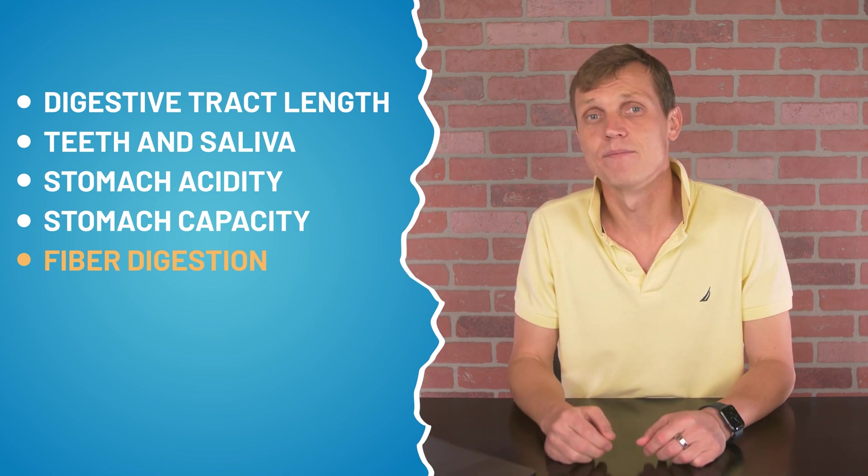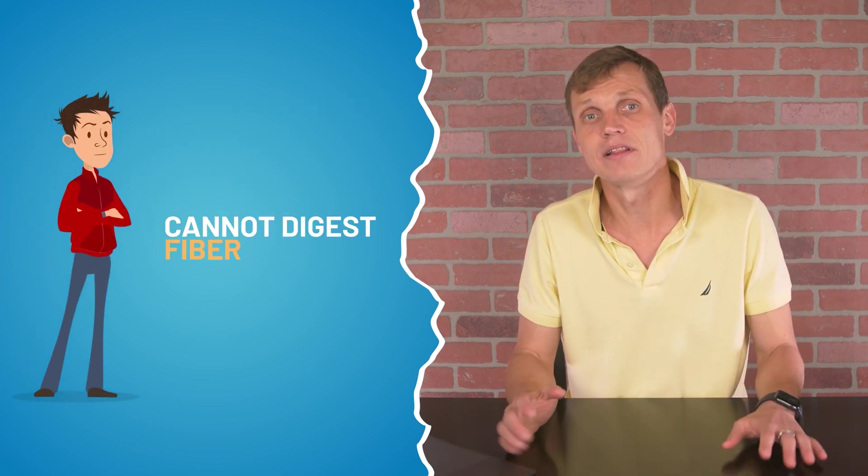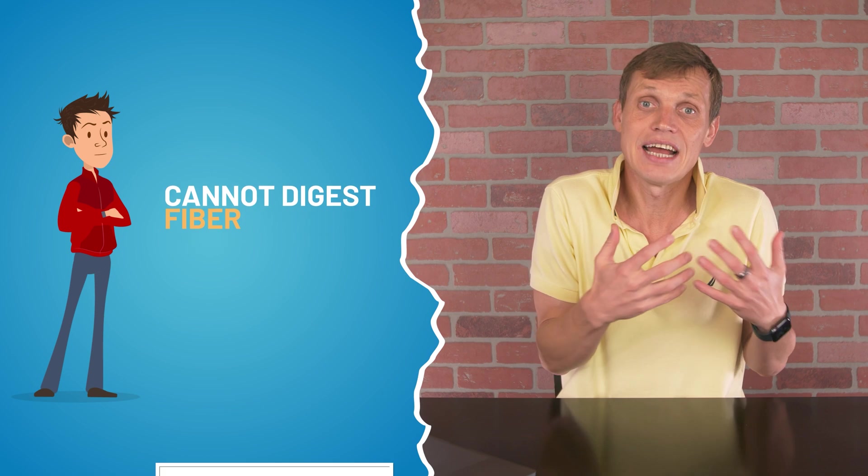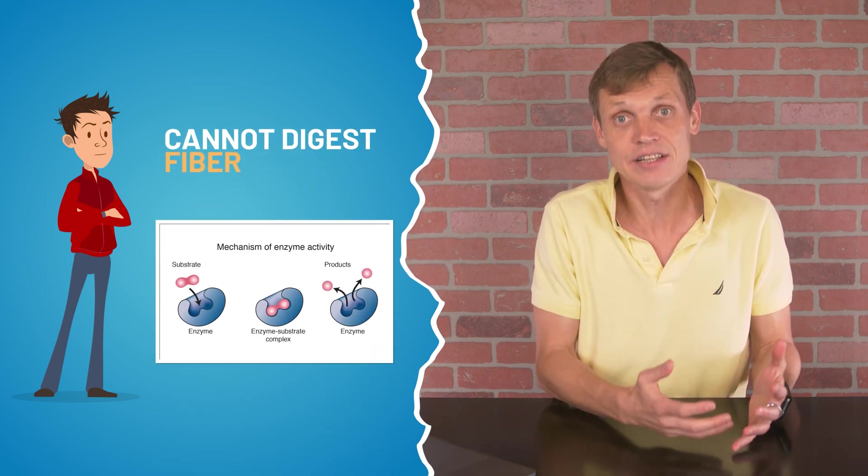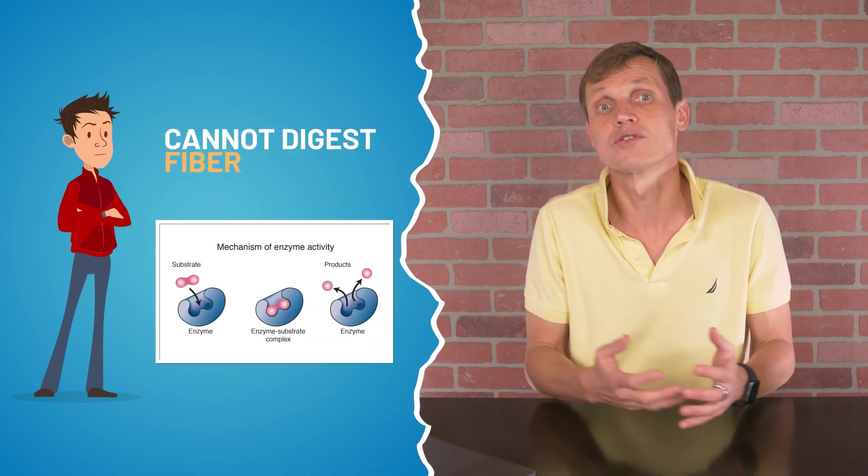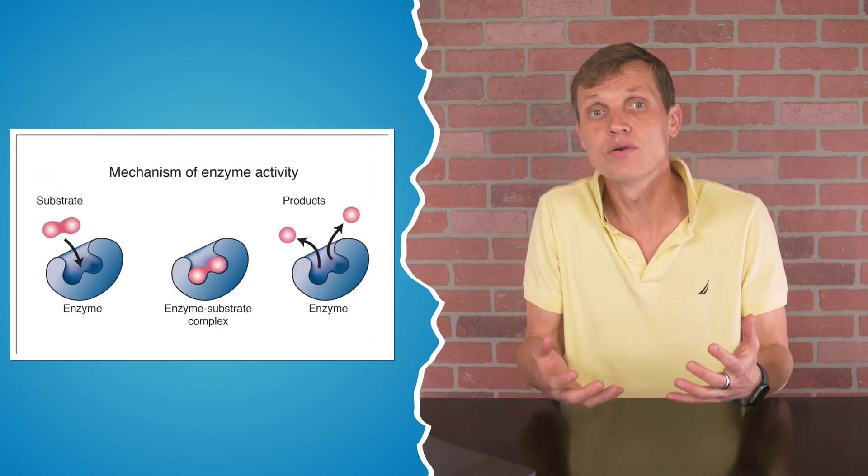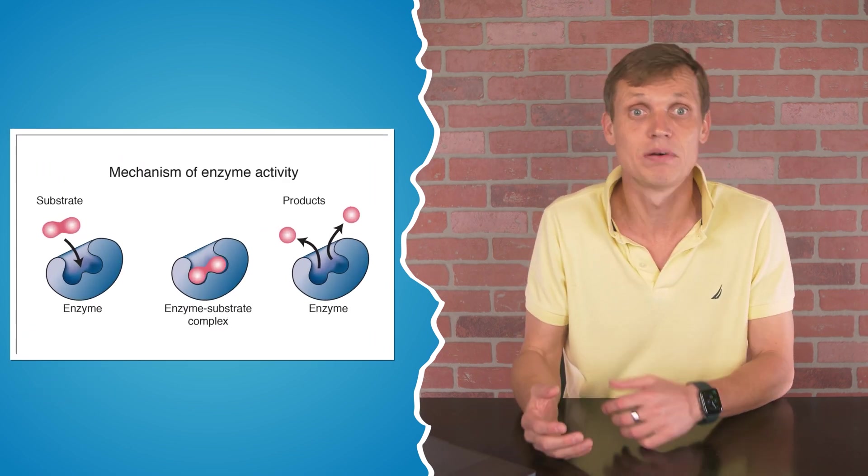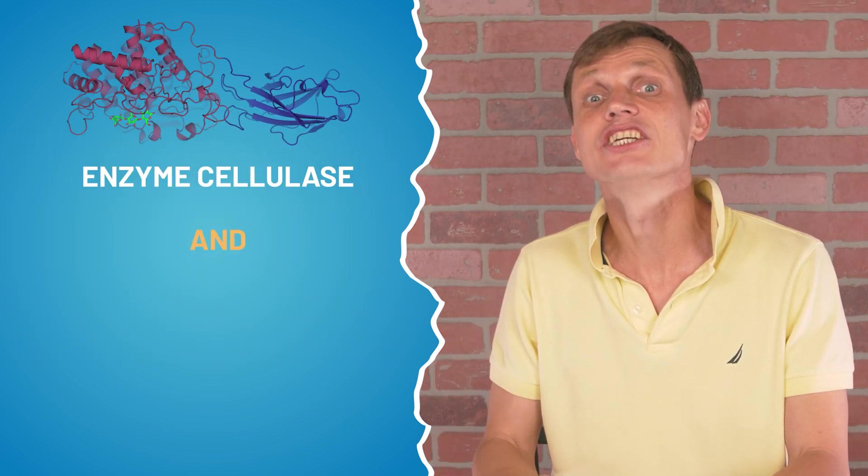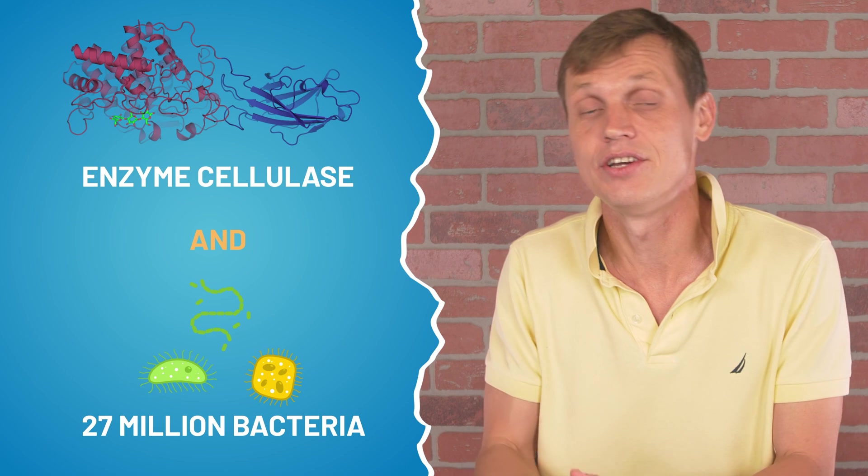The ability to digest fiber. Humans cannot digest fiber like herbivores, because the necessary enzymes to break down the beta-acetyl linkages are not available in humans or carnivores. These beta-acetyl linkages – simply put, cellulose – is chemically very similar to starch but harder to break down. The enzyme cellulase is needed in addition to 27 million bacteria to do the job.